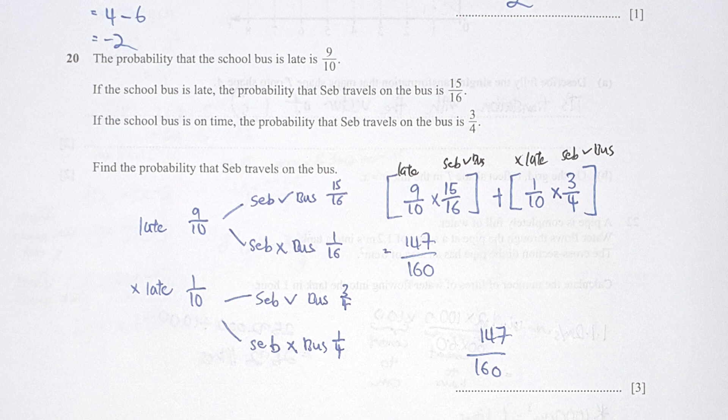Find the probability that Seb travel on a bus. So there's two conditions here where it is late and Seb still take a bus or when the bus is not late and Seb still take a bus. So I list the probability down accordingly, multiply and add them up. Your final result should be 147 over 160.